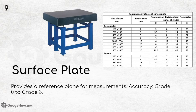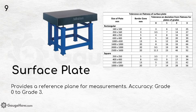Surface plate. A surface plate provides a reference plane for measurements and can be checked for accuracy from grade 0 to grade 3. A chart showing tolerance flatness gives the size of the plate, the border zone in mm, and the tolerance on deviation from flatness for each grade.